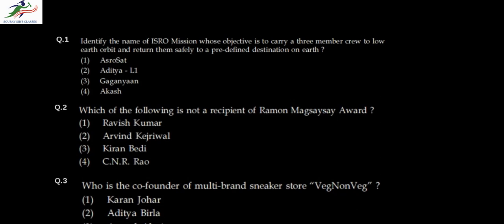Question one says: identify the name of the ISRO mission whose objective is to carry a three-member crew to the Earth's orbit and return them back. This is Gaganyaan, which was in the news of late. The next question asks which of the following is not a recipient of the Magsaysay Award.